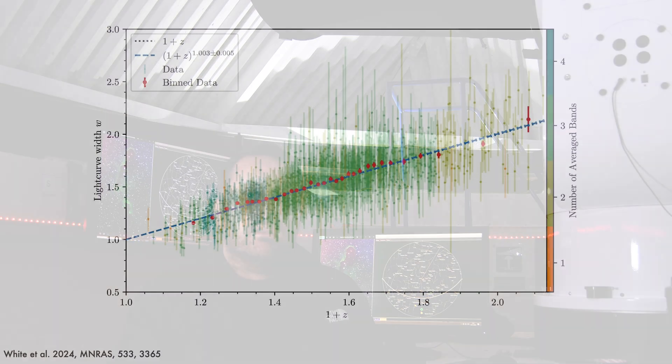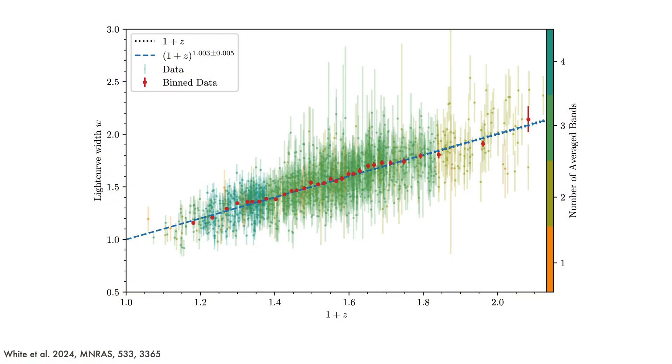Now amazingly, this has been observed. Most recently, Ryan White at the University of Queensland and collaborators measured the time it took to reach peak brightness for a sample of over 1,500 supernovae observed with the Dark Energy Survey. And they've found that the time taken to reach peak brightness scales with 1 plus the redshift perfectly, as you can see in this plot.